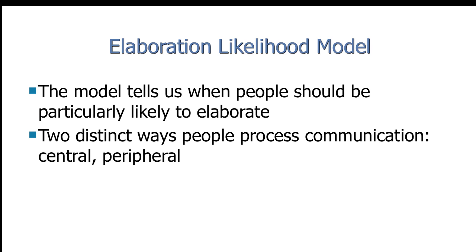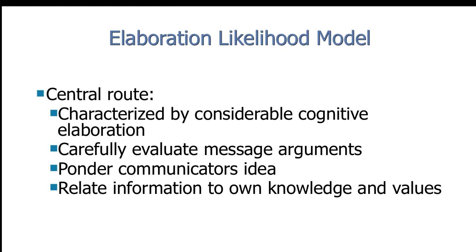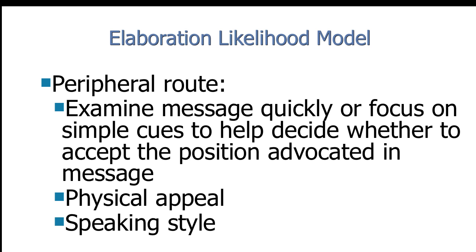The elaboration likelihood model tells us when people should be particularly likely to elaborate. There are two distinct ways people process communication: the central route and the peripheral route. The central route is characterized by considerable cognitive elaboration — we carefully evaluate message arguments, ponder communicators' ideas, and relate information to our own knowledge and values. The peripheral route is different; we examine a message quickly or focus on simple cues to decide whether to accept or reject the position. Weak arguments like physical appeal and speaking style are more influential in the peripheral route.